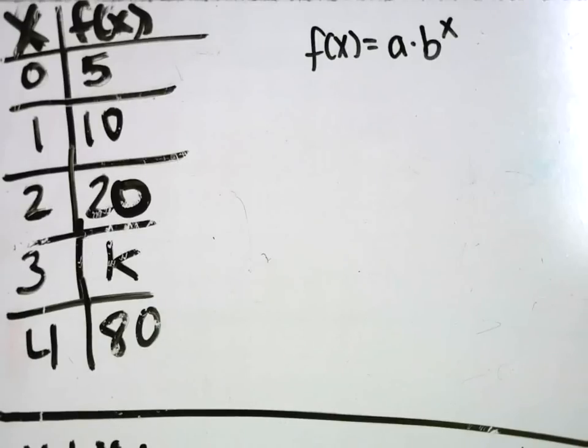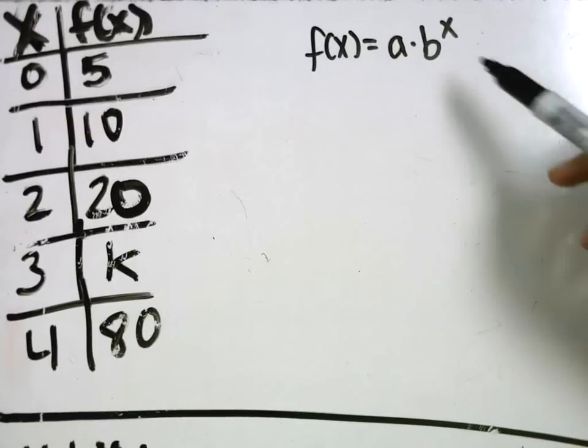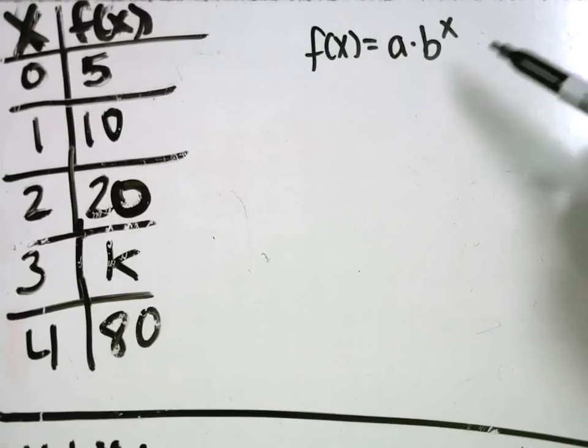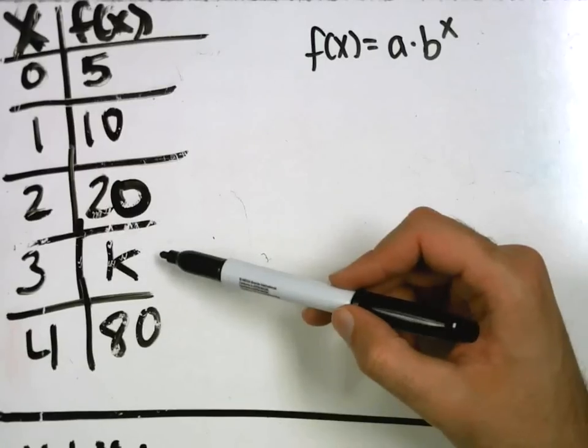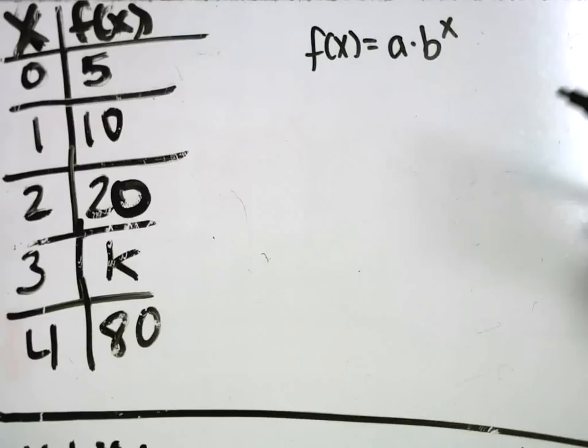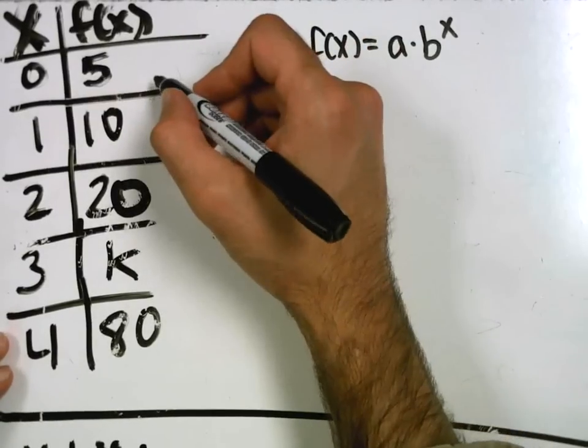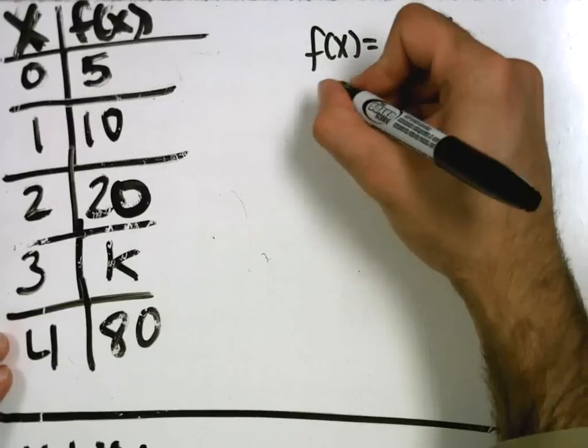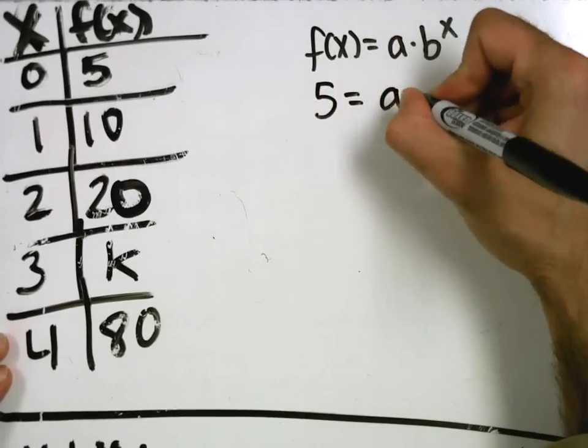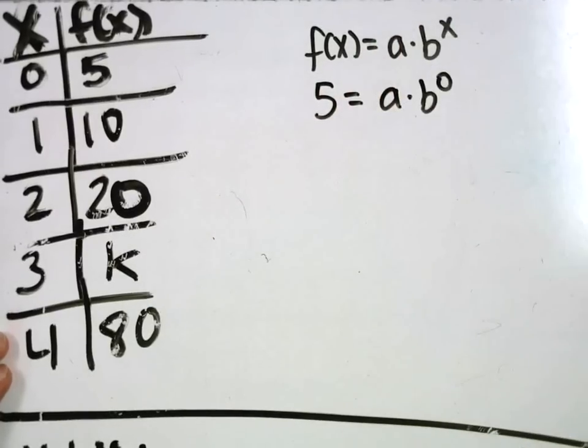So in this case we need to find the formula. And then we'll use the formula to help us find K. Because there's an unknown variable. So what we're going to do is the same thing we did before. Which was plug in these numbers. 5 equals A times B to the 0. B to the 0 is 1. A is 5.